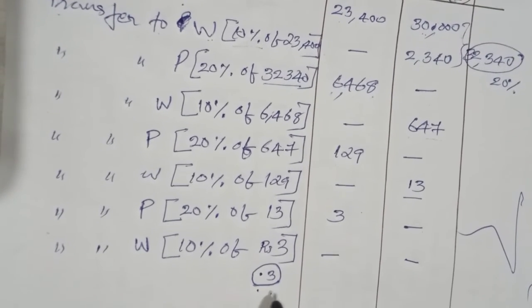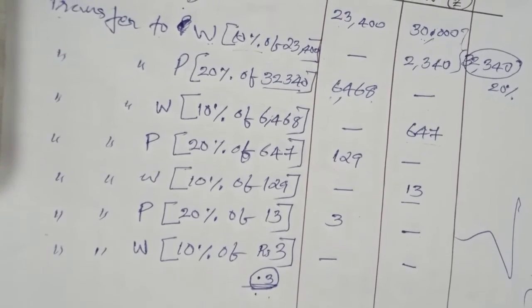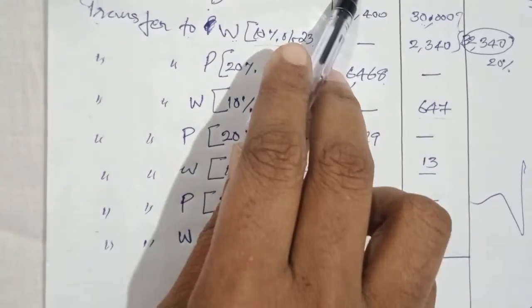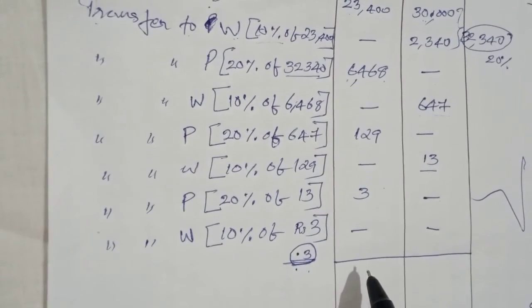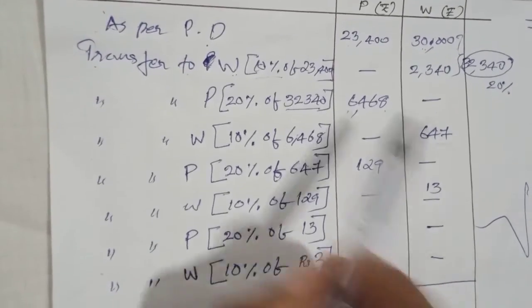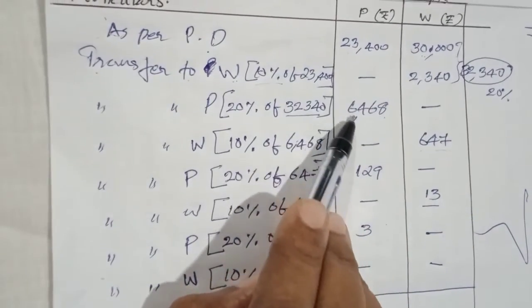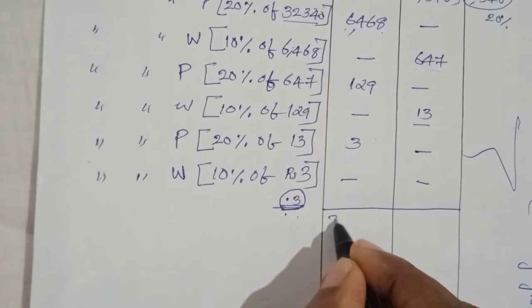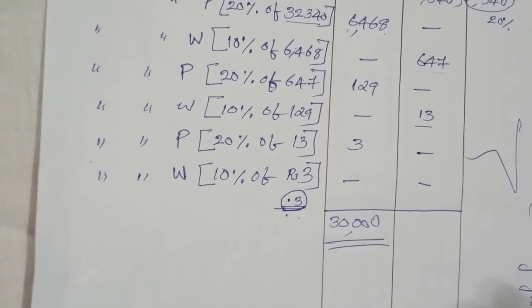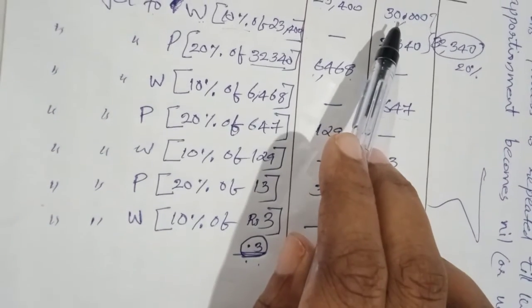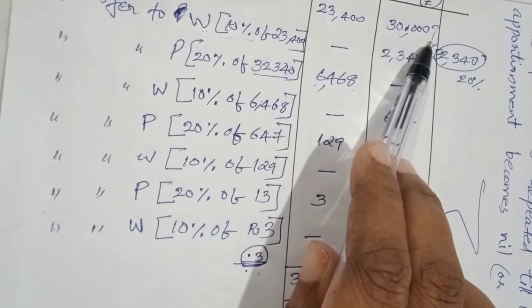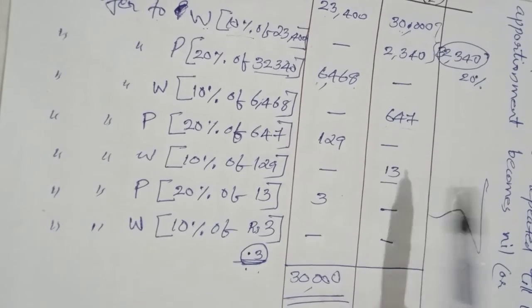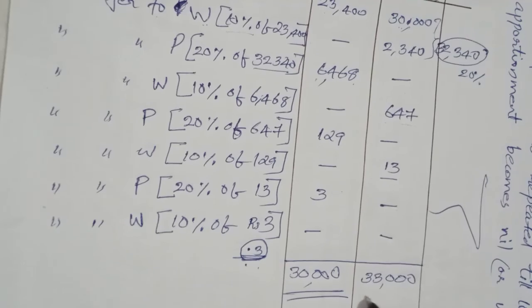Now we calculate the total overhead cost for each service department. Service department P: 23,400 + 6,468 + 129 + 3 = Rs. 30,000. Service department W: 30,000 + 2,340 + 647 + 13 = Rs. 33,000. These are the total overhead costs for service departments P and W as per the Trial and Error Method of secondary distribution.